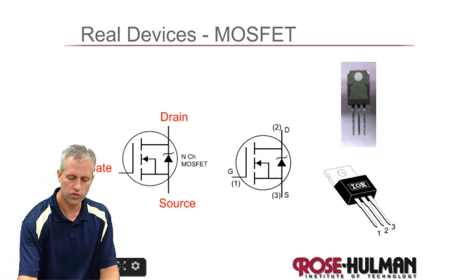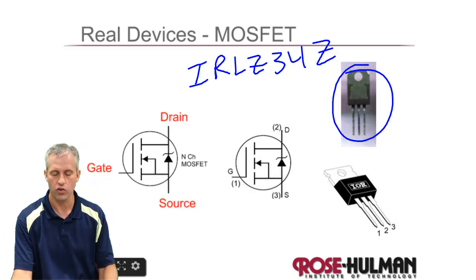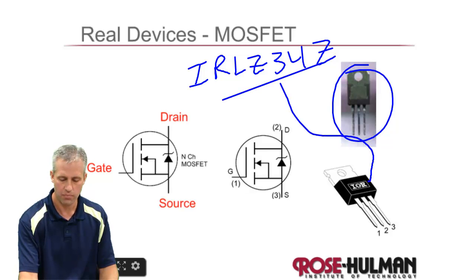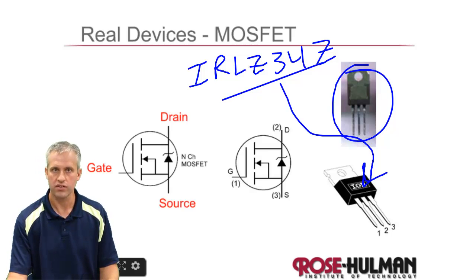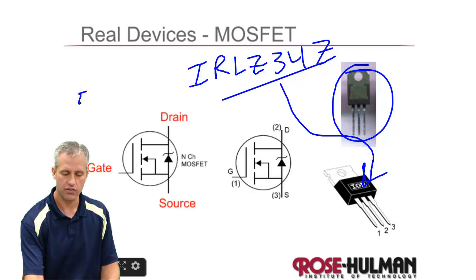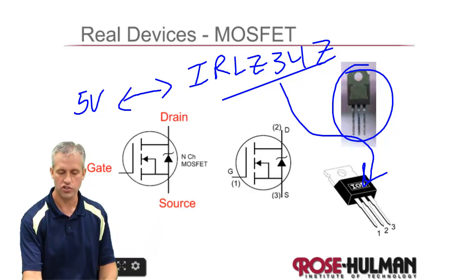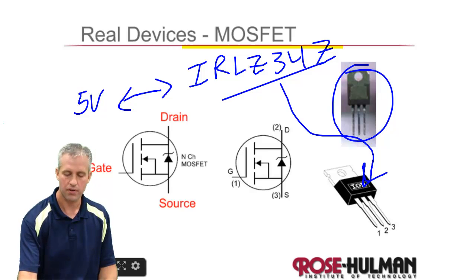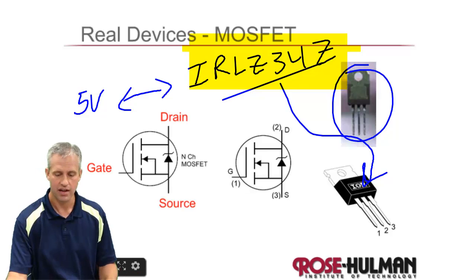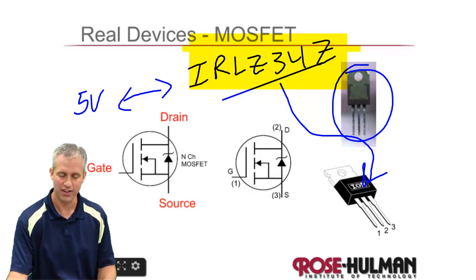The one we'll use is called an IRLZ34N. They come in a package that's big enough to hold in your hand, and they will say something on the front. They often get confused in our class with the 5-volt regulators because they look about the same. So make sure: if it says something with the words '5V' on it, that means it's a voltage regulator. If it says something different — potentially that long number — then it's an N-channel MOSFET. These part numbers change so rapidly that I wouldn't count on it saying that exact number, but it probably won't say 5V — that's the best way to know it's a MOSFET.